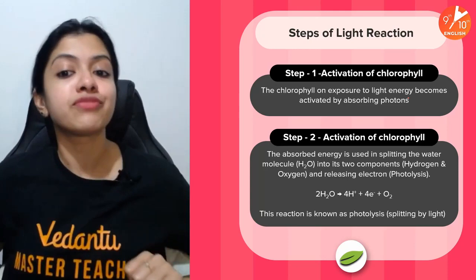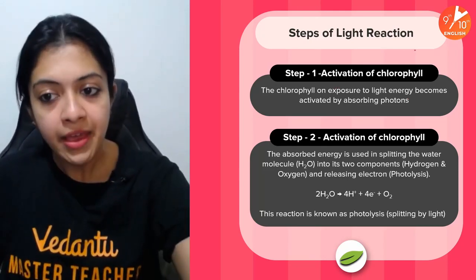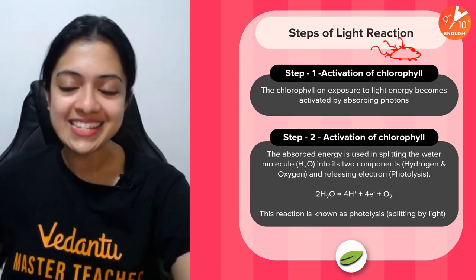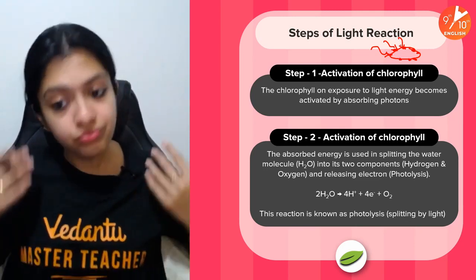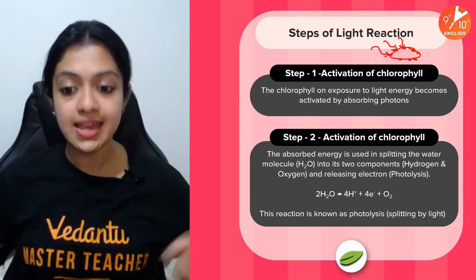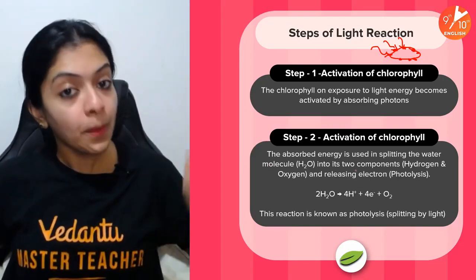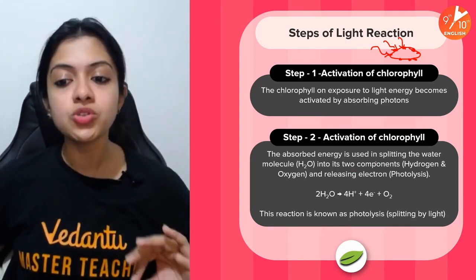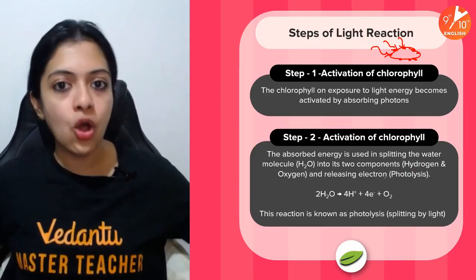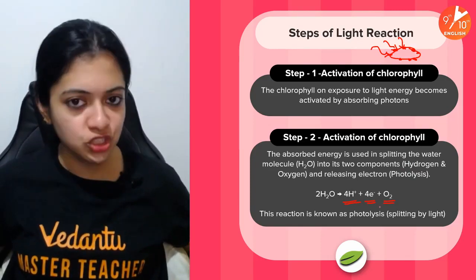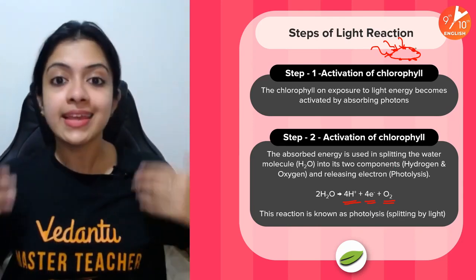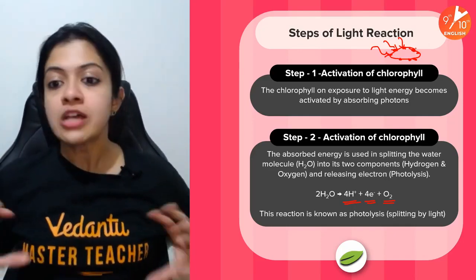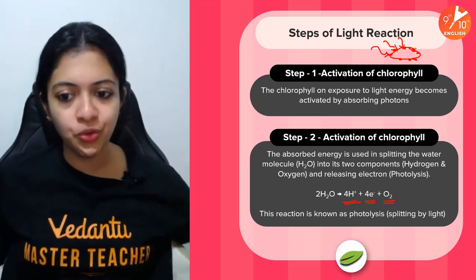The very first step of the light reaction is activation of chlorophyll. Imagine one individual thylakoid — on its membrane are several chlorophyll molecules. When exposed to sunlight, the chlorophyll molecules get activated, meaning the electrons get excited. Step two: the absorbed solar energy is used to split water molecules into its components. The excited electrons spend their energy in a useful place — splitting water molecules taken in by the plant from the soil.